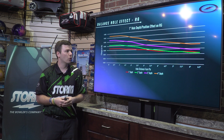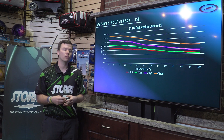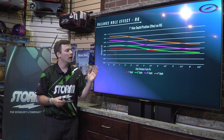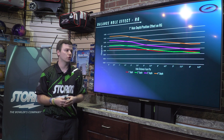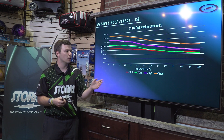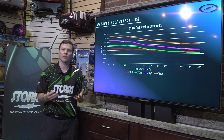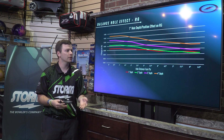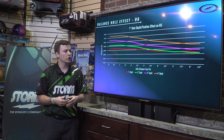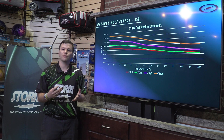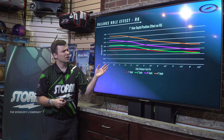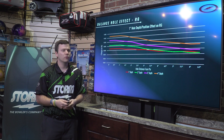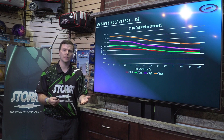You'll notice we have four different colored lines on the graph. Each line represents a different depth that the hole is drilled. The red line represents a one-inch depth — that's our shallowest. The orange line represents a four-inch depth, which is our deepest hole.